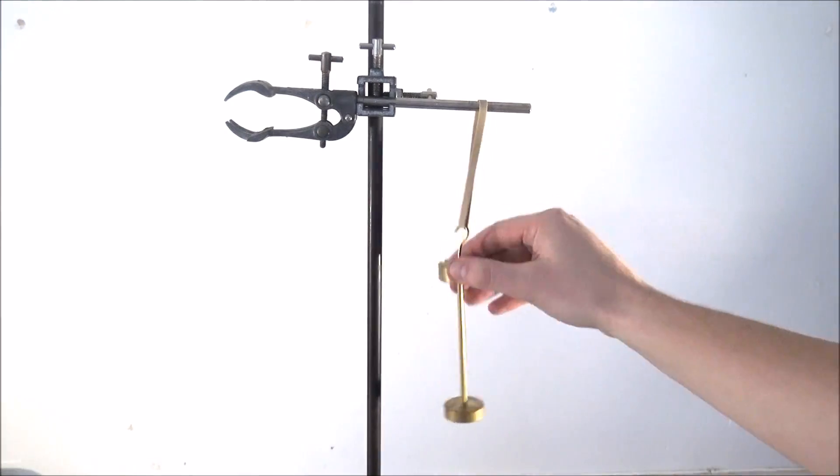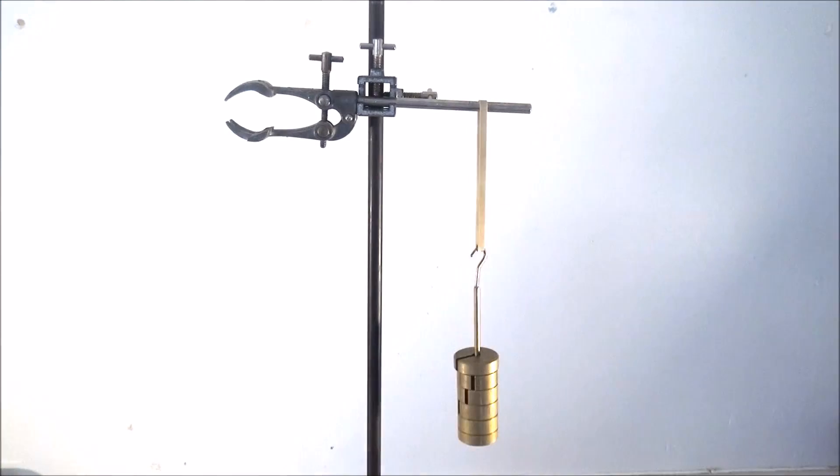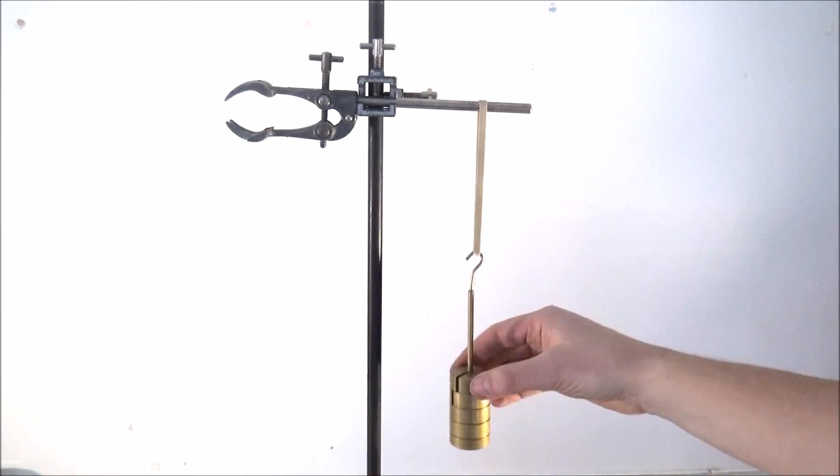Now rubber is a type of material called an elastomer. If you load it with a certain force and you can measure the extension, what we can look at is the loading and then the extension as it's unloaded.